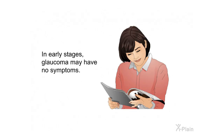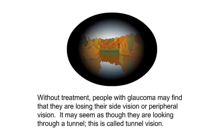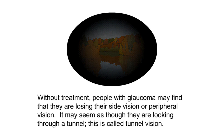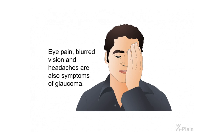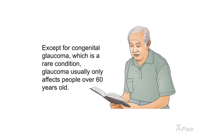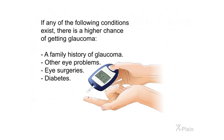In early stages, glaucoma may have no symptoms. Without treatment, people with glaucoma may find that they are losing their side vision or peripheral vision — it may seem as though they are looking through a tunnel, known as tunnel vision. Over time, patients may continue to lose overall vision until there is none at all. Eye pain, blurred vision, and headaches are also symptoms of glaucoma. Except for congenital glaucoma, which is rare, glaucoma usually only affects people over 60 years old. African Americans over the age of 40 have a higher risk. A family history of glaucoma, other eye problems, eye surgeries, and diabetes also increase the risk.